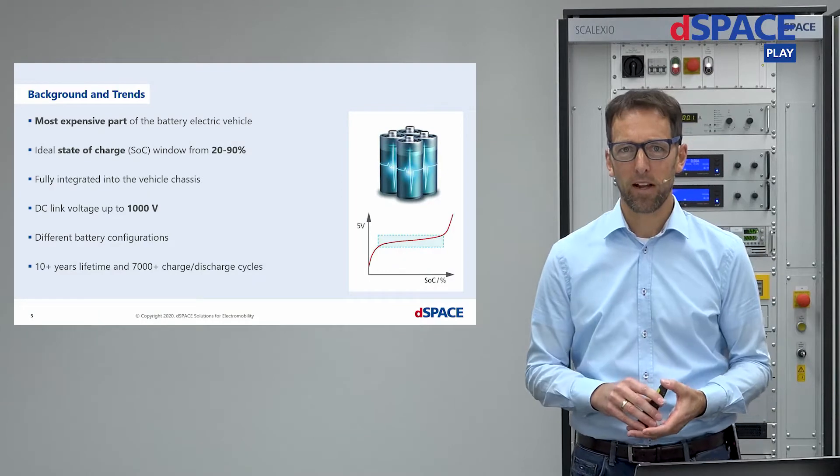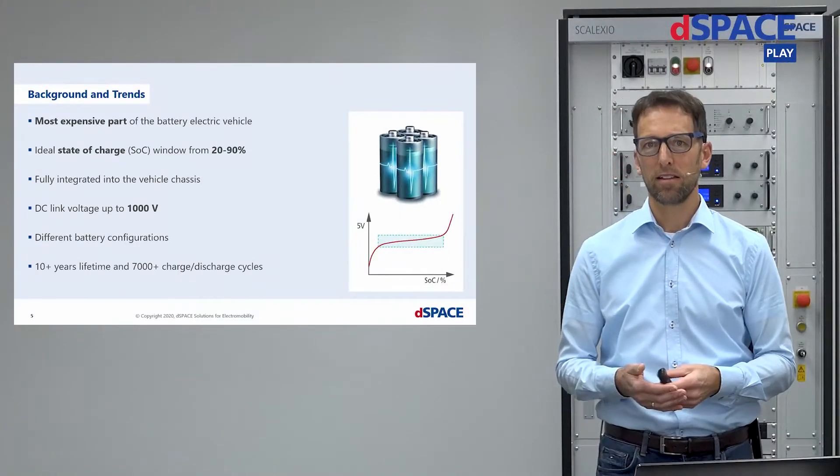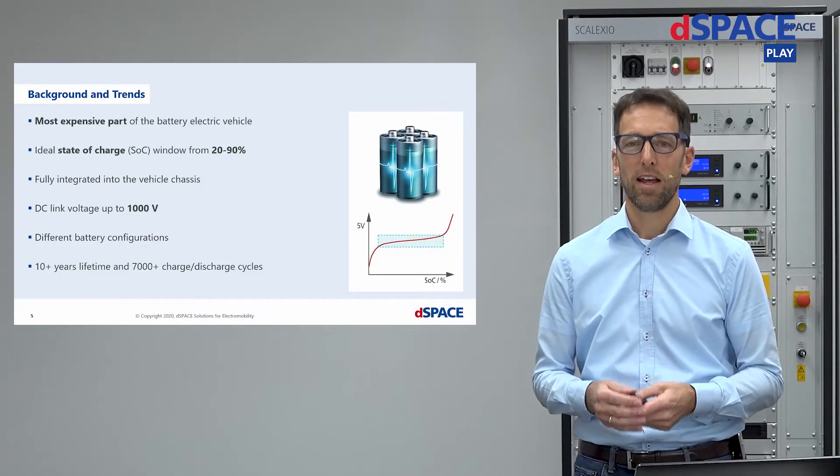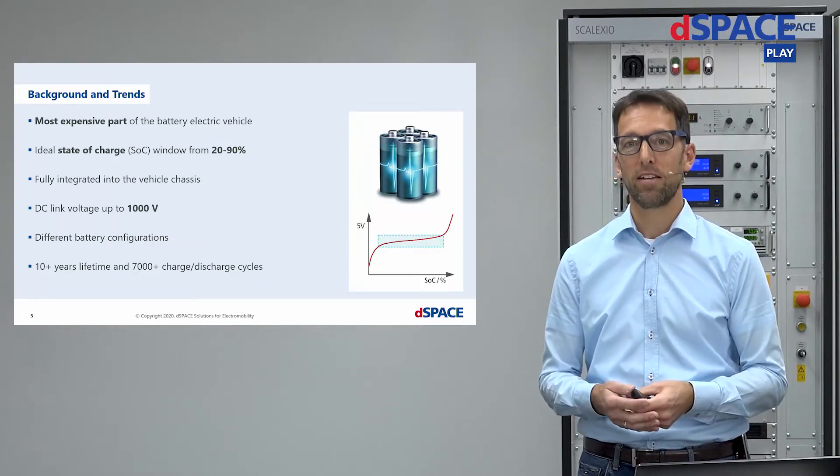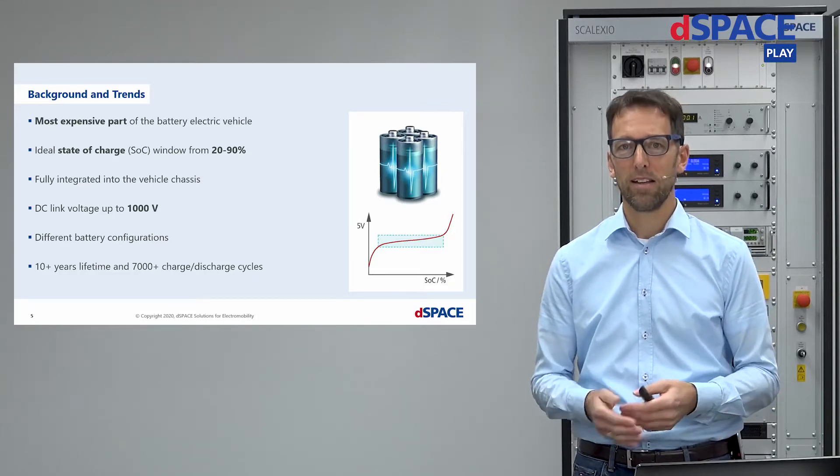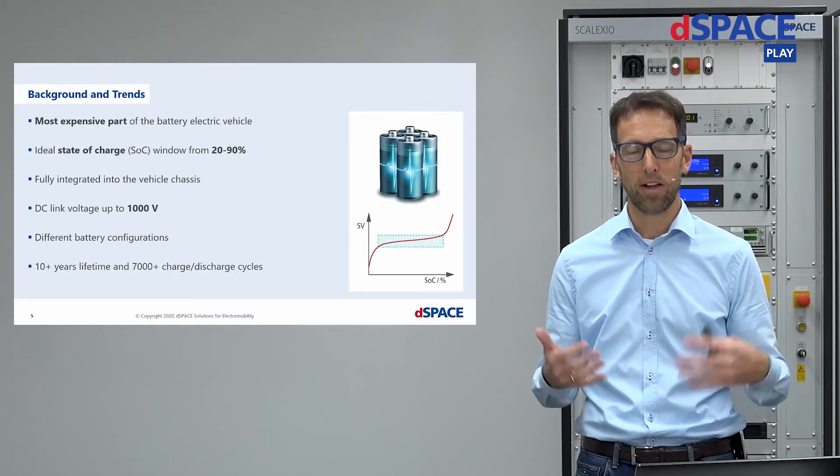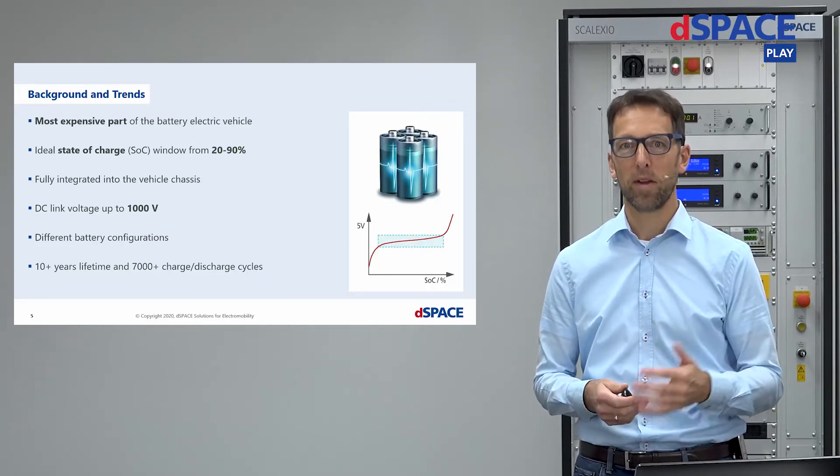Let me start with some kind of slides for a general introduction. Of course, you know the background of the battery topic. The battery is the most expensive part of a vehicle. And the ideal state of charge for such a battery cell is between 20 and 90 percent. Never overcharge a battery cell and never undercharge it. Then it gets damaged and a damaged battery cell is one in the stack. But this influences the behavior, the state of health of the whole battery and so your reachable distance is dramatically reduced.